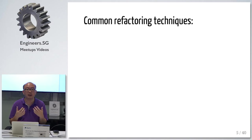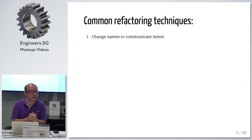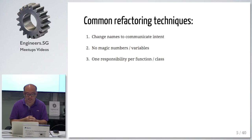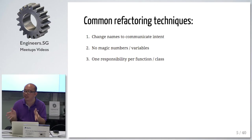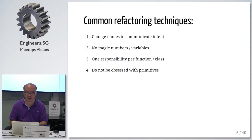Because I want our meetups to be practical, I'm going to share some practical tips. There are four things I'll be sharing. Number one: how do you change names — you should have techniques to change names that communicate intent. Number two: remove any magic numbers because those are scary. Number three: one responsibility per function or class — this should be common sense but actually it's not. And last: do not be obsessed with primitives like arrays, strings, and all that stuff.